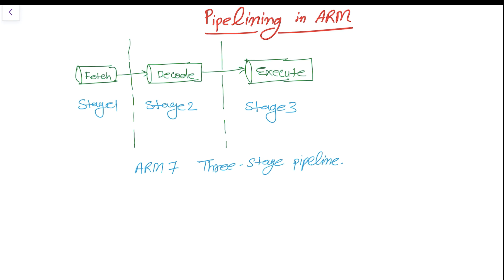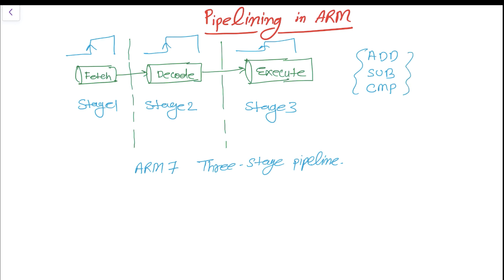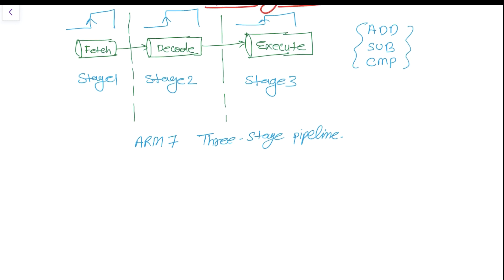Each stage takes one clock cycle — fetch takes one clock cycle, decode takes another, and execute takes another. So to complete all three stages, it takes at least three clock cycles to fetch, decode, and execute one instruction. Suppose we have three instructions to execute: ADD, SUB (subtract), and CMP (compare).